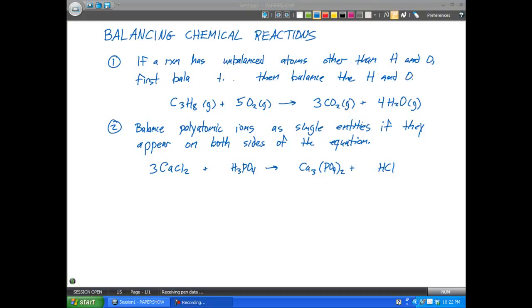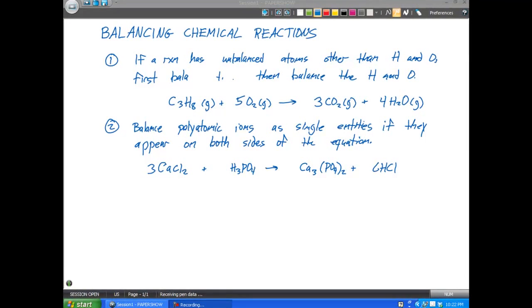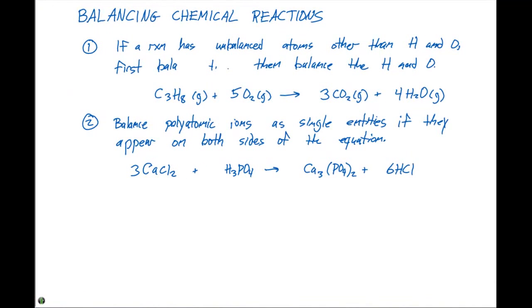That will give us six chlorines on the left. We only have one on the right. So we're gonna put a six in front of that HCl. This gives us six hydrogens on the right, three hydrogens on the left. We can put a two in front of that H3PO4, which then will allow us to balance that chemical equation.